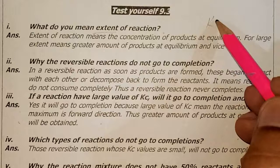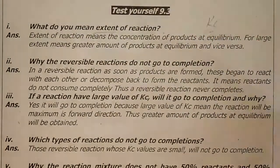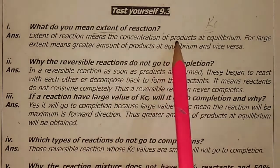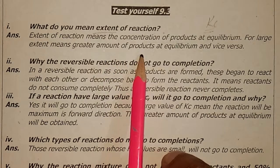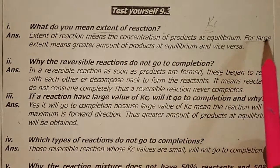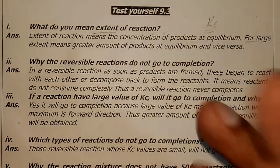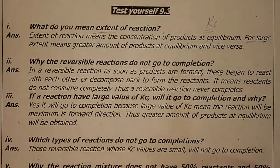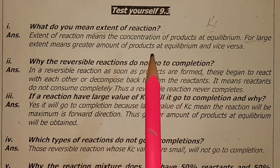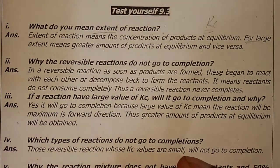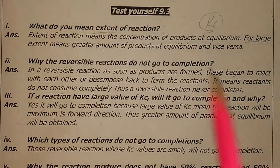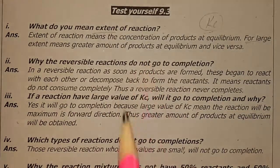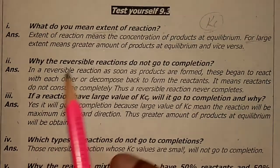The extent of reaction means the amount of products at equilibrium, and vice versa. If a large Kc value comes from a reaction, it means you will have products as well. If you understand this properly, there is a topic on the importance of Kc — a proper lecture is available. After this question, you will be 100% clear. Let's move towards the second part of this question.